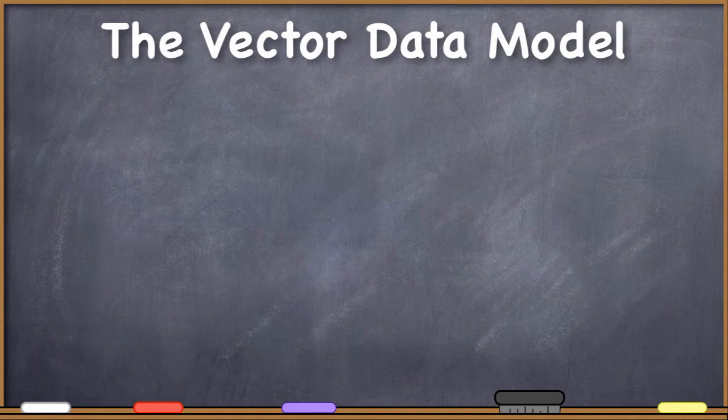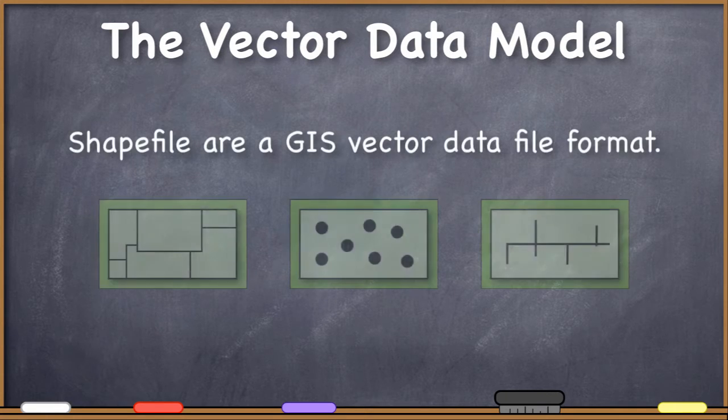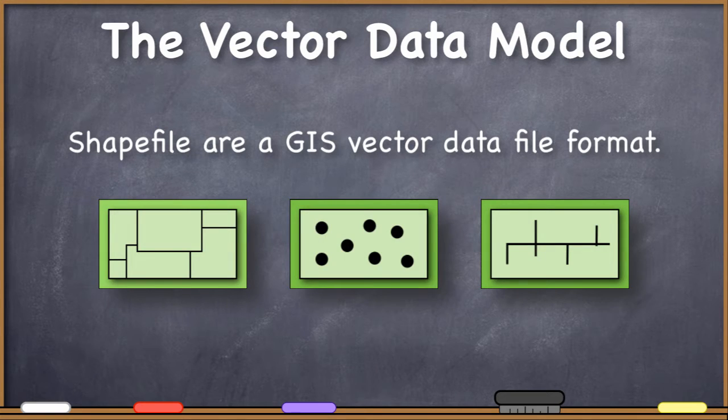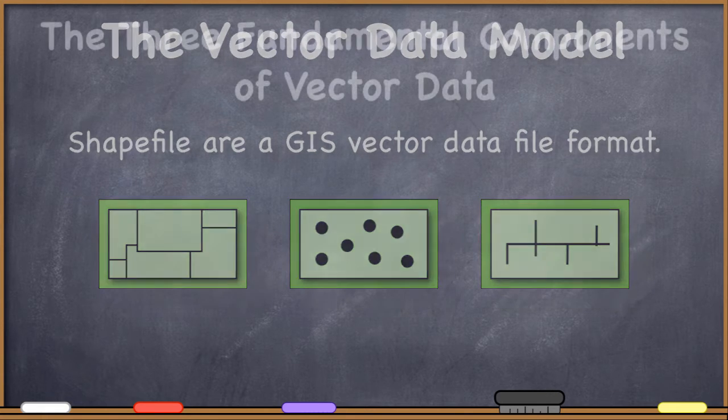Welcome to the first video on the Vector Data Model. It's one of the two major ways that we can represent geographic features or phenomena in a computer system. If you've been following along with my introductory Geographic Information Systems course, then you've already used data in the Vector Data Model. The Data Model itself is rather simple. It fundamentally consists of three different things.